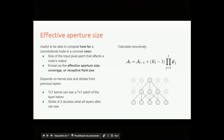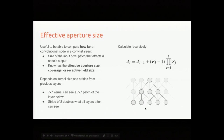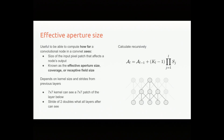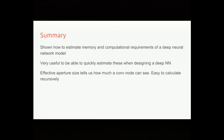The formula is: aperture(L) = aperture(L-1) + (kernel_size - 1) × product_of_strides. For example, with kernel size 3 and aperture of 3 from the layer below, the aperture becomes 5. Including pooling just doubles things as you go up. This is especially relevant for fully convolutional networks — for instance, if you want to build a contour detector, you need to think about how wide a patch in the image you need to examine. This lecture has covered how to estimate memory and computational requirements for neural networks, and how aperture size tells you how much a node can see.